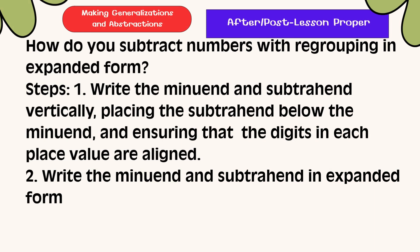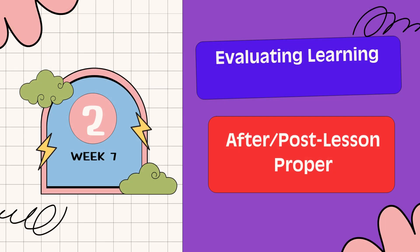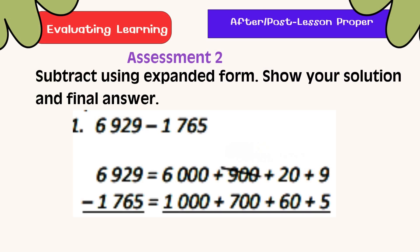Making Generalization and Abstraction: How do you subtract numbers with regrouping in expanded form? Step 1: Write the minuend and subtrahend vertically, placing the subtrahend below the minuend and ensuring that the digits in each place value are aligned. Step 2: Write the minuend and subtrahend in expanded form. Step 3: Subtract the numbers in each column starting from the ones place, moving to the left, regrouping when necessary. Then add the differences from each column to get the final answer. Evaluating Learning: Subtract using expanded form. Show your solution and final answer.